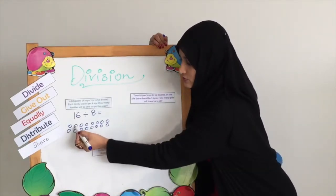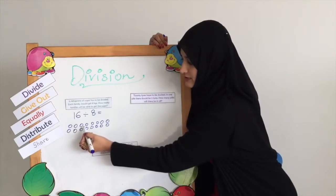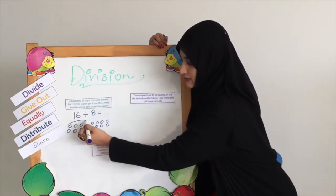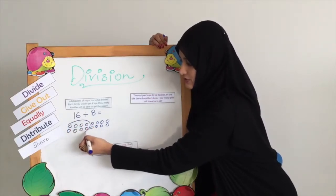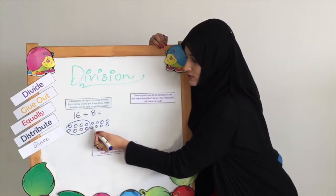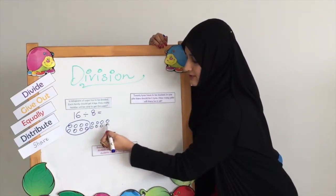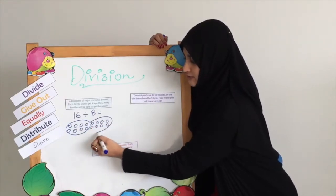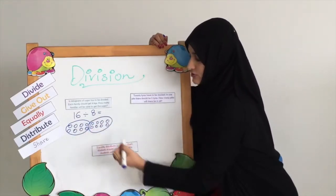We count out 8 — that's one family getting the sugar. Then we count another 8 — that's the second family getting the sugar.